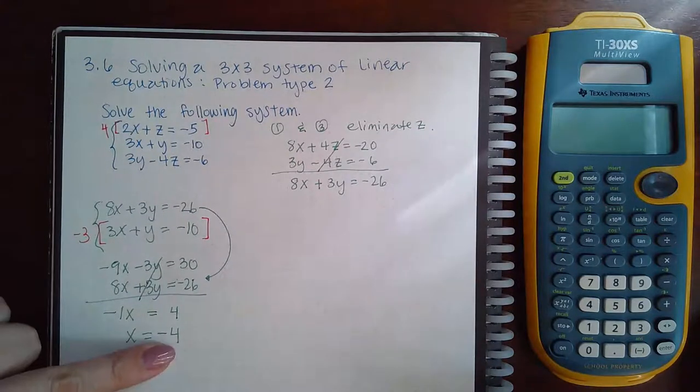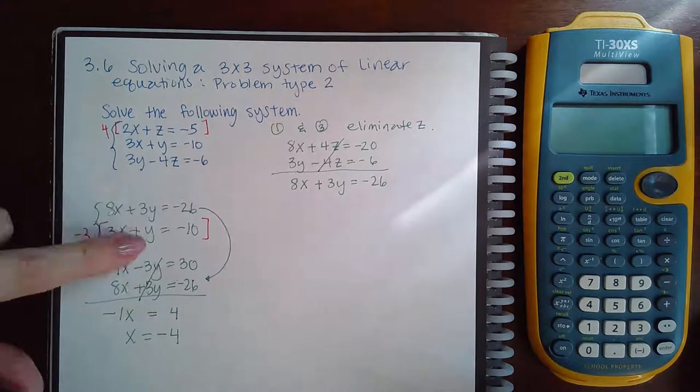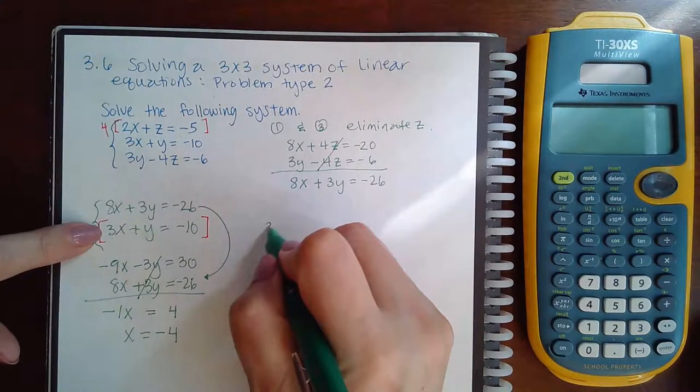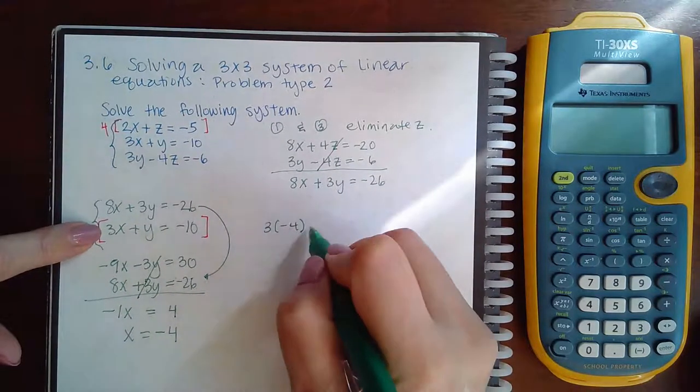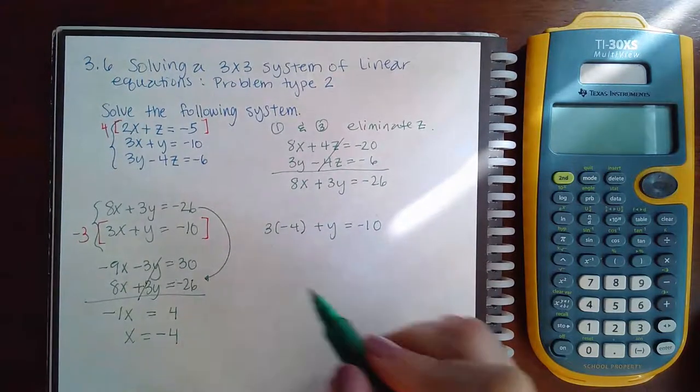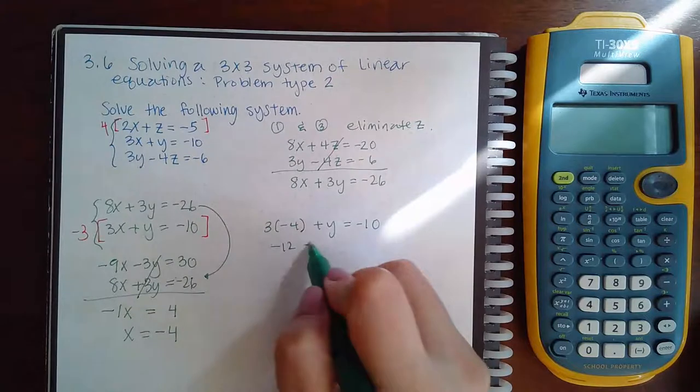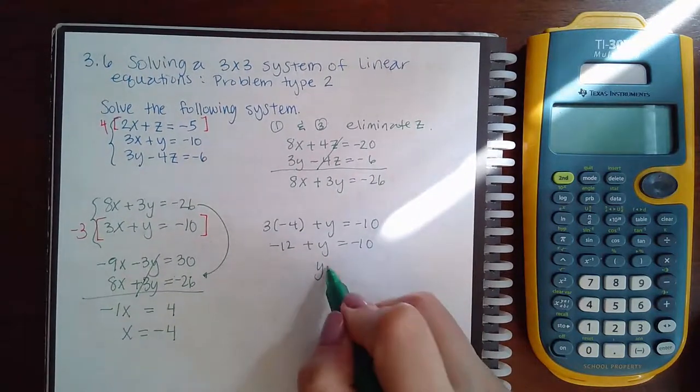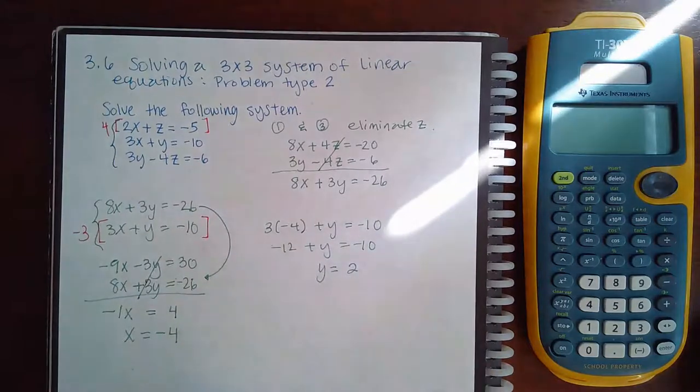And so I can plug that into either one of these equations. I'm going to use the one I have in the box. So I'm going to get 3 times negative 4 plus y equals negative 10. That's negative 12 plus y equals negative 10. If I add 12 over that's positive y equal to positive 2.